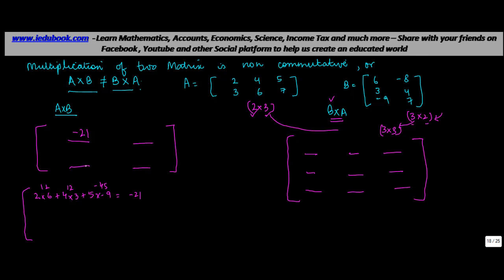For first row, second column: 2×(-8) = -16, plus 4×4 = 16, plus 5×7 = 35. This gives -16 + 16 + 35 = 35. That is the first row, second column element of A×B.